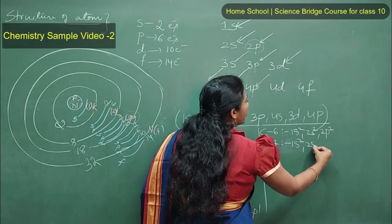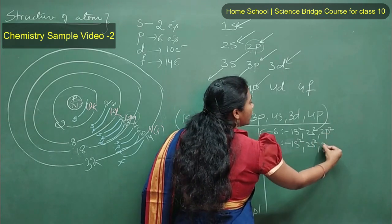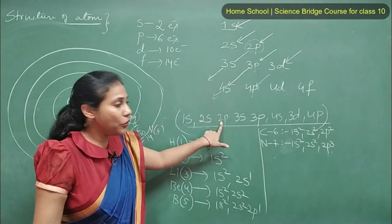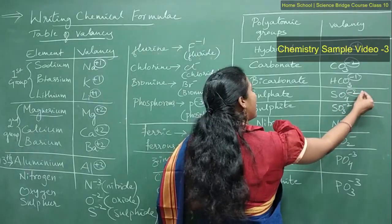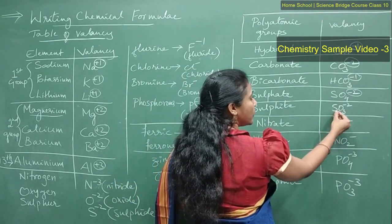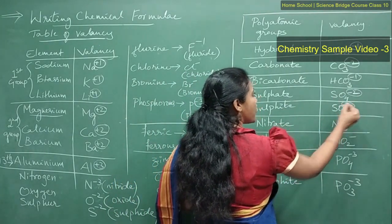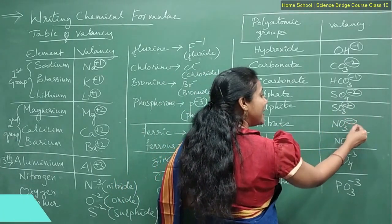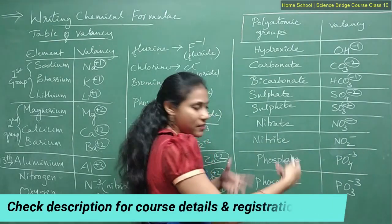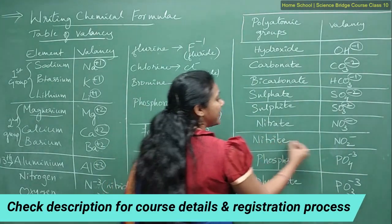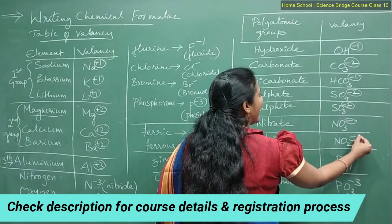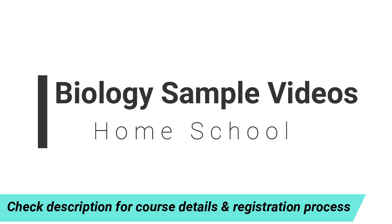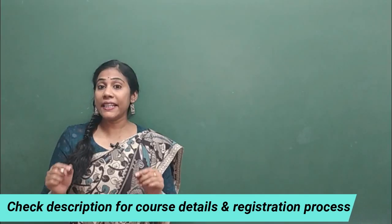The electronic configuration would show 1s², 2s², and the 2p sub-shell would show three electrons — with a capacity of 6. For chemical symbols: sulfite is SO₃²⁻ with valency minus 2; nitrate is NO₃⁻ with valency minus 1. If there is just a minus sign with no number, it means minus 1.